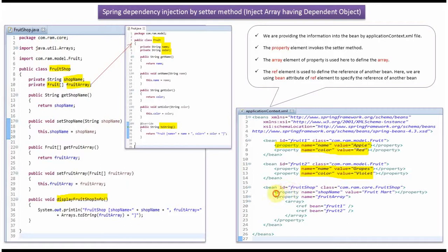For the FruitShop object, the property name is shop name and value is Fruit Mart, so the setShopName method will be called by the Spring container and shop name will be set as Fruit Mart. The property name is fruit array, so the setFruitArray method will be called and fruit array will be set as fruit one object and fruit two object. The array element is used to define the array.